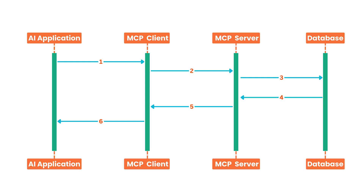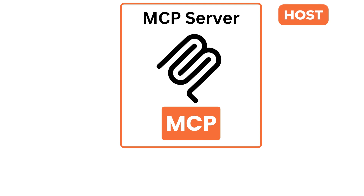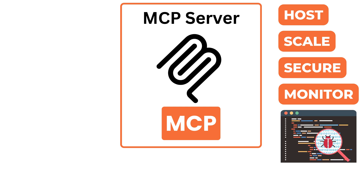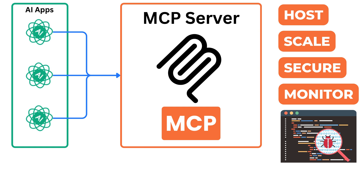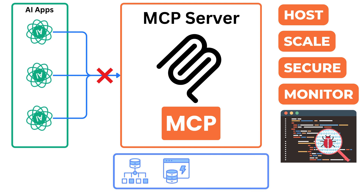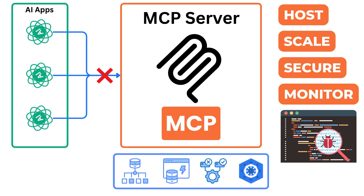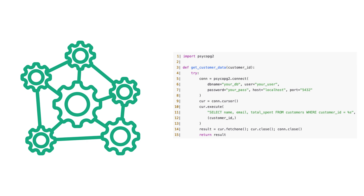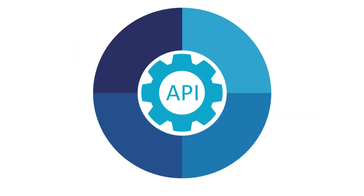Not only does this introduce latency, but it adds operational overhead. You need to host the MCP server, scale it, secure it, monitor it, and if something goes wrong, now you are debugging a distributed system instead of a local bug. That MCP server is a shared dependency across all your AI apps, introducing a single point of failure. You can add load balancers and caching, deploy replicas, use Kubernetes — but why are we engineering all this complexity just to avoid writing 15 lines of code? If you're already using an API gateway, you can achieve 80% of what MCP promises just by exposing clean APIs and calling them with a shared library. You don't need to invent a whole new protocol for that.